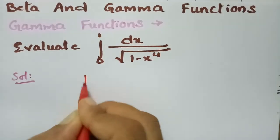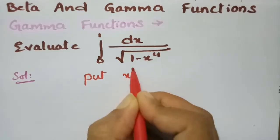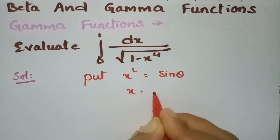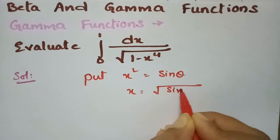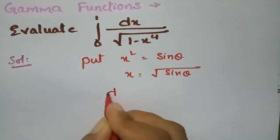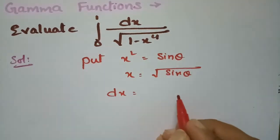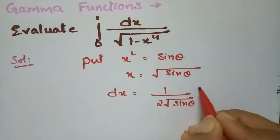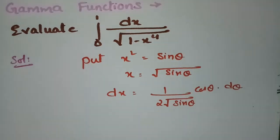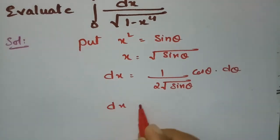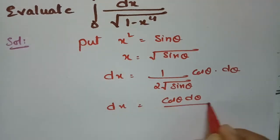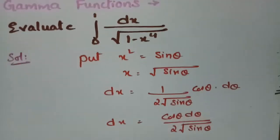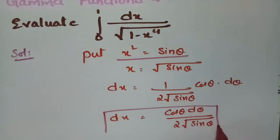We put x² = sin θ, so x = √(sin θ). Deriving dx, we get dx = cos θ dθ divided by 2√(sin θ). So this is our x² value and this is our dx value.